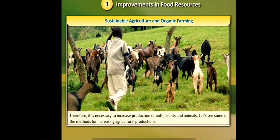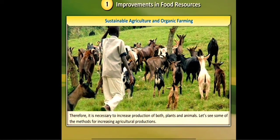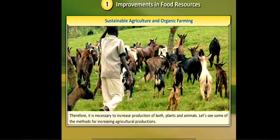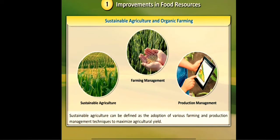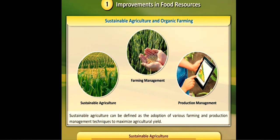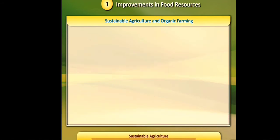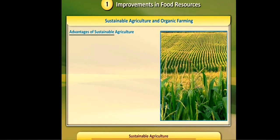Let's see some of the methods for increasing agricultural production. Sustainable agriculture can be defined as the adoption of various farming and production management techniques to maximize agricultural yield.